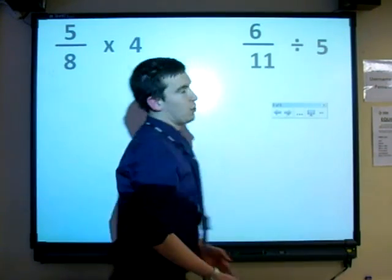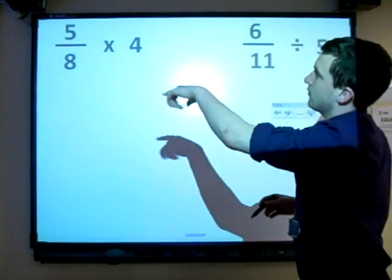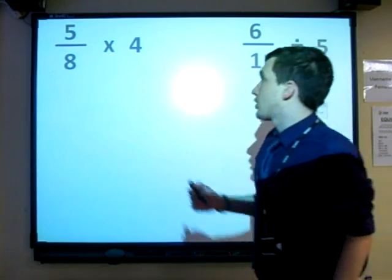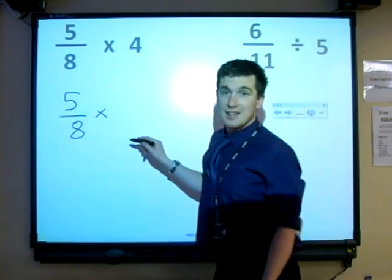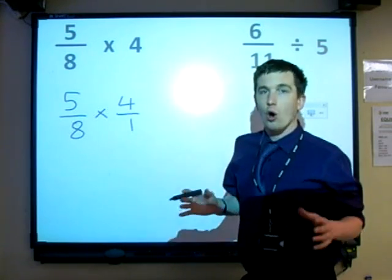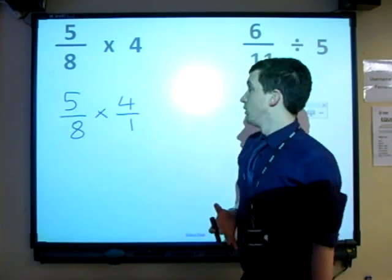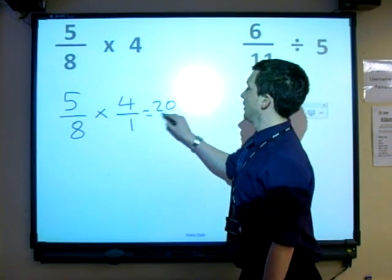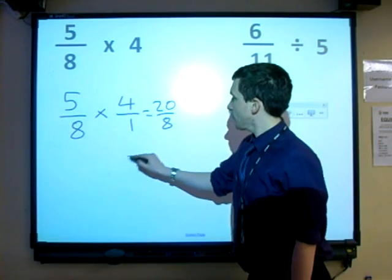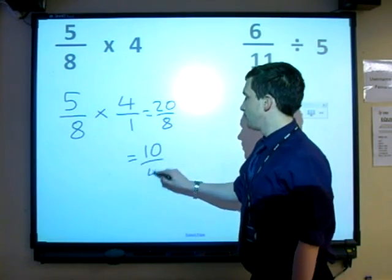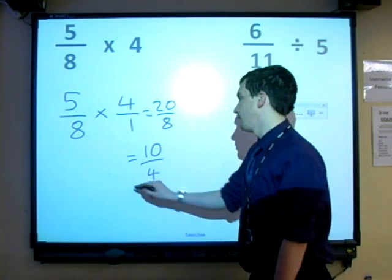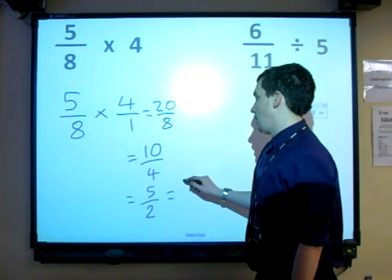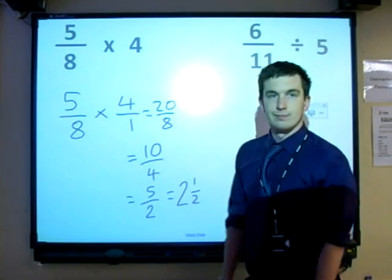The last one, I've got two examples. 5/8 times 4, and the only thing here we've got to remember is that 4 as a fraction can be written as 4 over 1. Any whole number, any integer, is written over 1. So times the top, times the bottom. 20 over 8, simplify it. 10 over 4, simplify it. 5 over 2, simplify it. That's 2 and 1/2. Done.